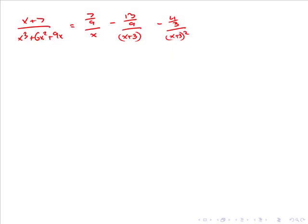In the last video, we determined that the partial fraction expansion of x plus 7 over x cubed plus 6x squared plus 9x was given by 7 over 9 divided by x minus 13 over 9 divided by x plus 3 minus 4 over 3 divided by x plus 3 squared.